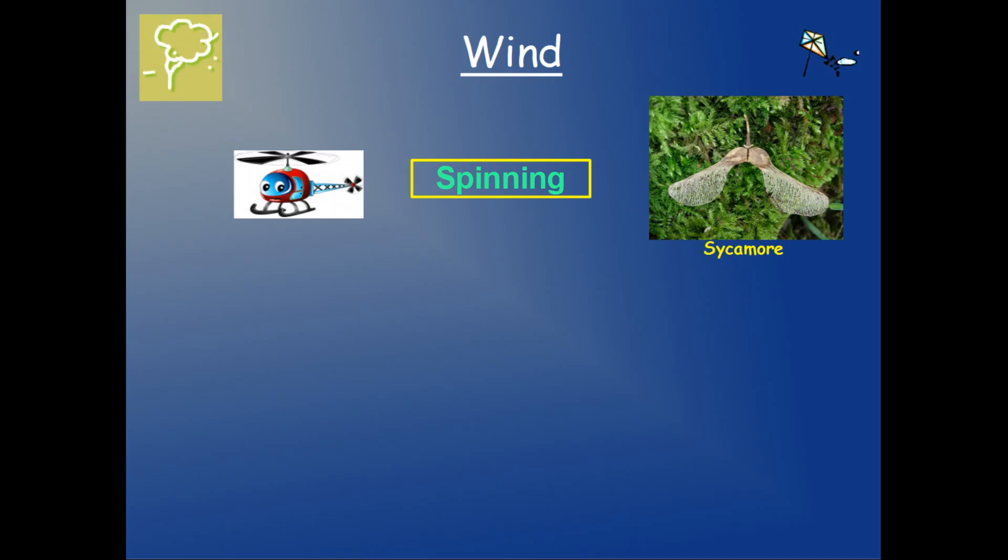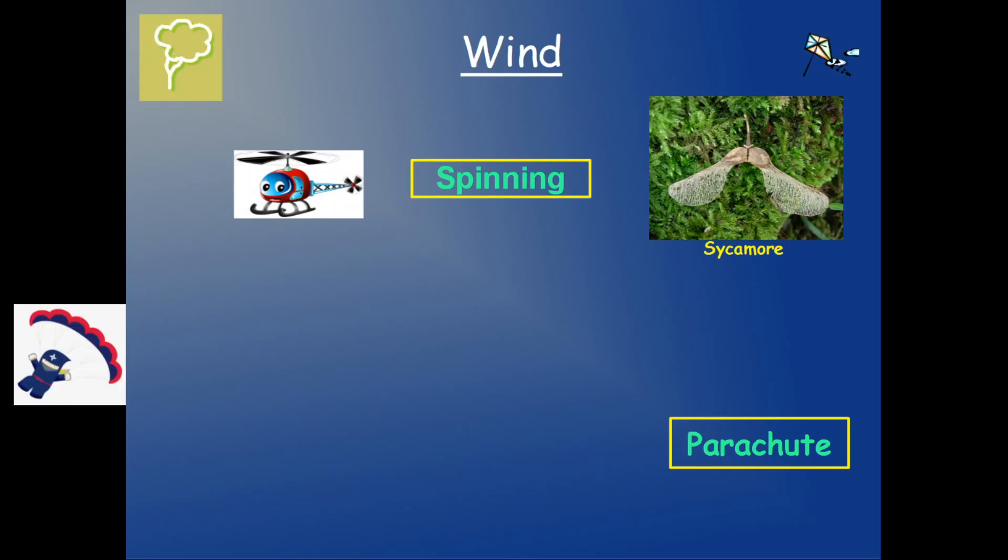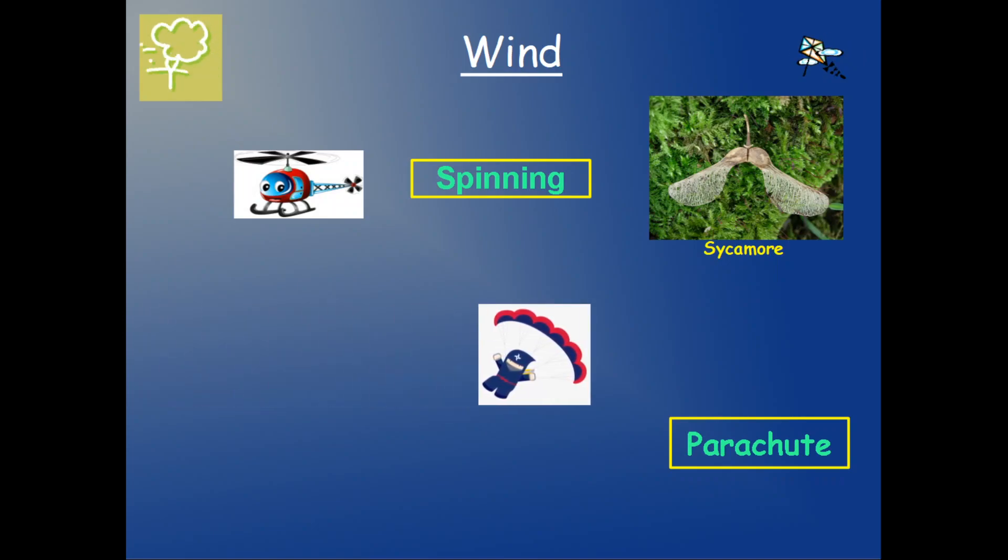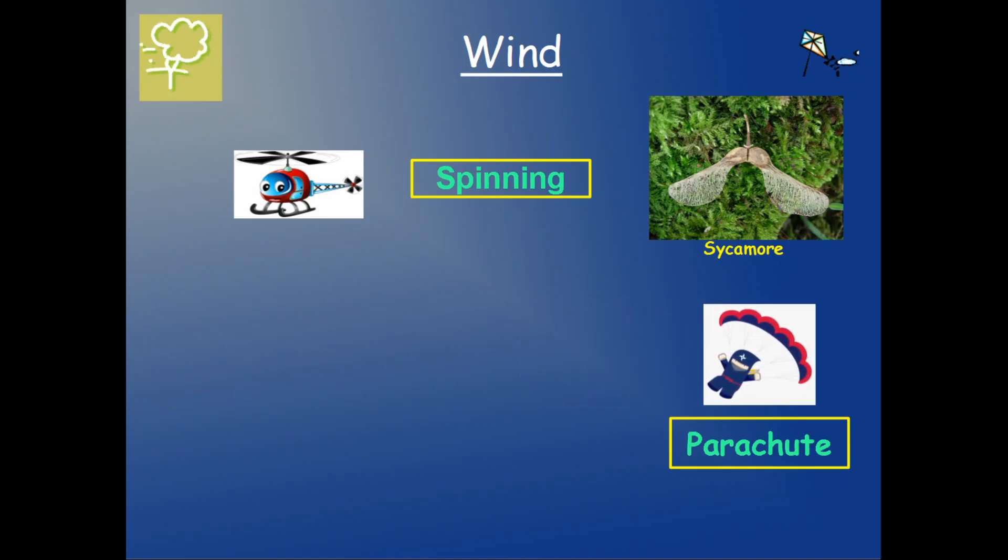Another option, instead of spinning, they can use parachutes. What is a parachute? For those who don't know, let me explain. This is a parachute. So when the wind blows away, the parachute is going to fly away. But instead of a ninja, what we're going to have is a seed. One example.